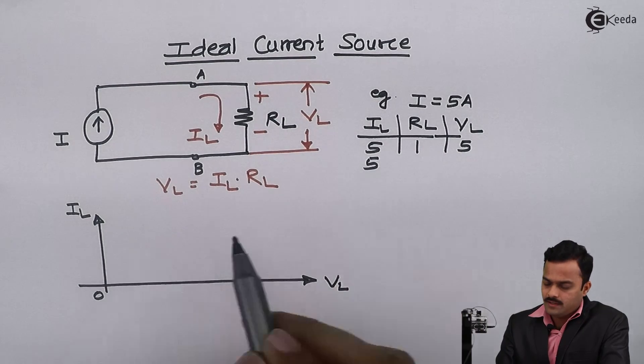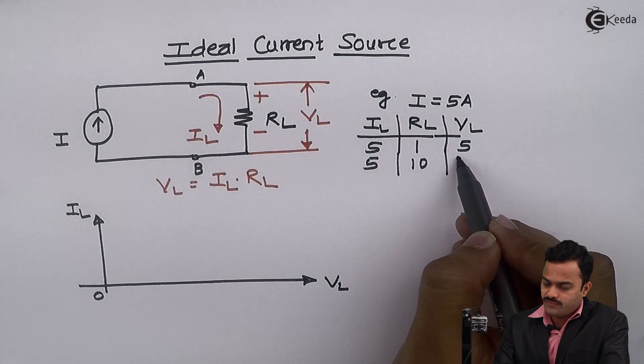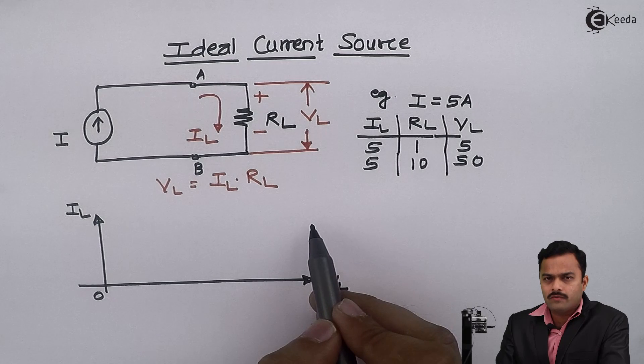Resistor value if I am considering 10, I will get VL as 50. One more value we will take for RL 100.